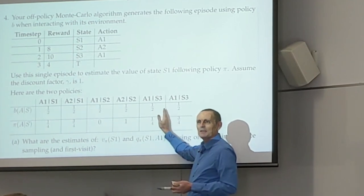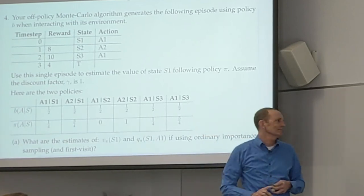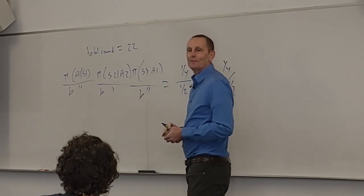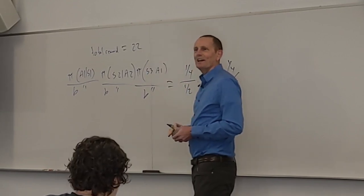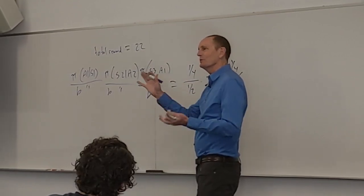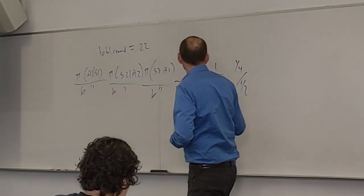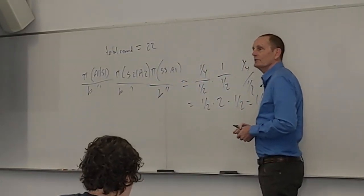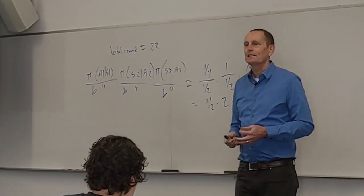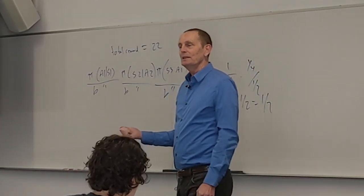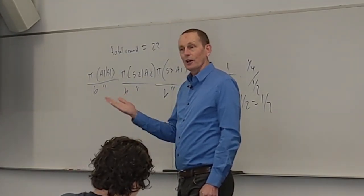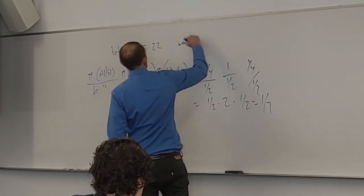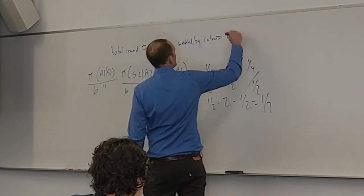One person pointed out the error and it was 50-50 as to which column people used. So it equals 1/2 times 2 times 1/2, which is a total of 1/2. This tells us that the episode is more likely under policy B than under policy pi, and so we should underweight our total of 22. Weighted by ratio equals 22 times 1/2, which equals 11.